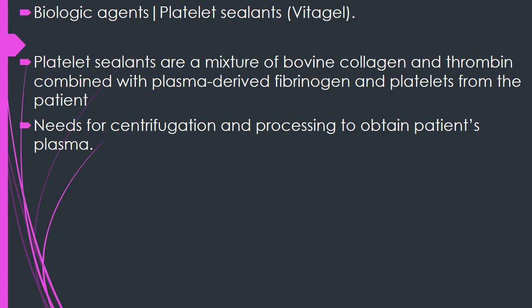Platelet sealants such as Vitagel have a unique combination with a delivery system using two syringes in a single-trigger gun. It is a mixture of microfibrillar collagen and thrombin on one side, with the patient's plasma-derived fibrinogen and platelets on the other side. Both mix and form a seal. The collagen and thrombin are bovine-derived, whereas the patient's plasma is autologous. When combined, they form a unique and quick clot which helps in the hemostatic process.